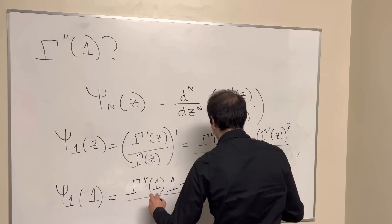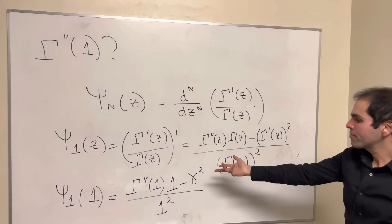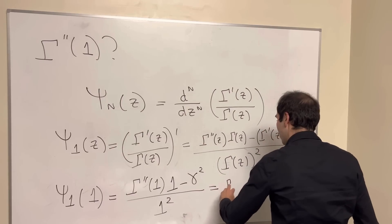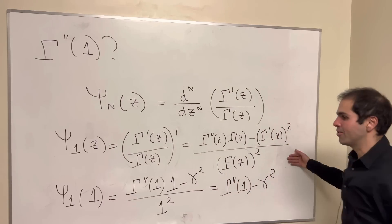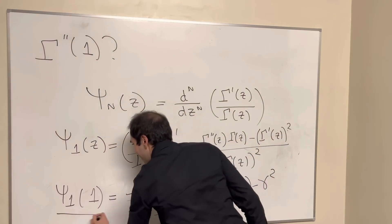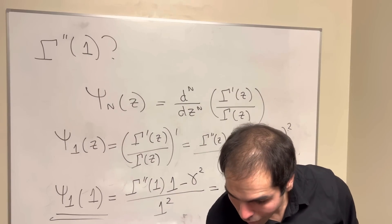And then again, gamma 1, which is again 0 factorial squared. And what you end up getting is what we want, gamma double prime of 1 minus Euler-Mascheroni squared. So really, the only thing that's left to do is calculate the polygamma function of order 1 at 1, and for this we need another formula.